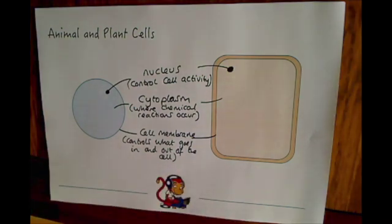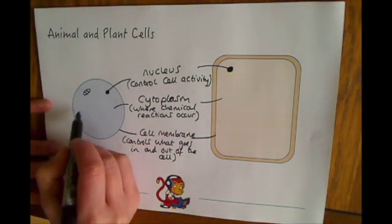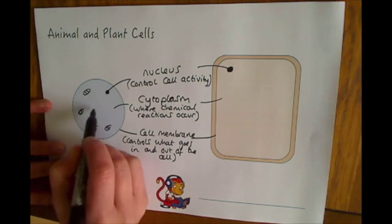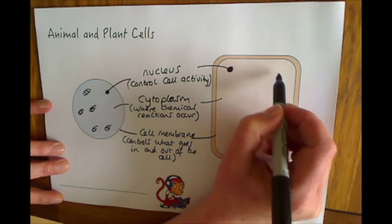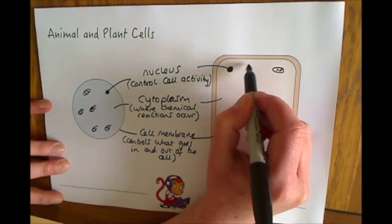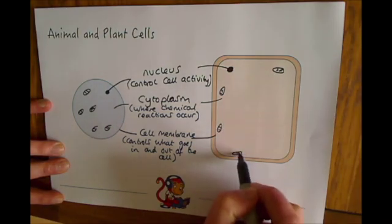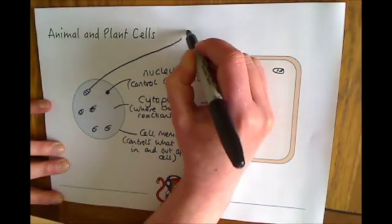A couple of other things they've got in common is something called the mitochondria, which may be new to some people. And there's several mitochondria throughout the cell, and the same for the plant cell. So these here are the mitochondria.